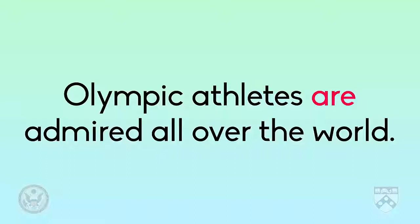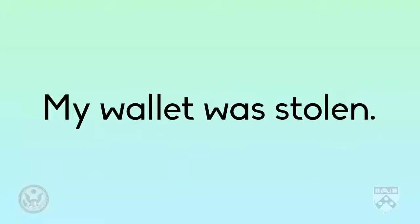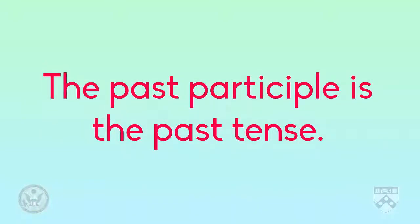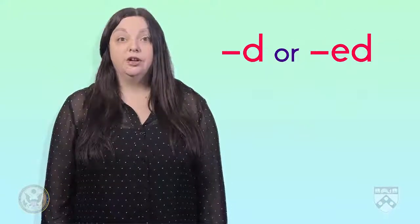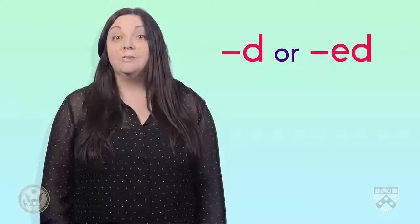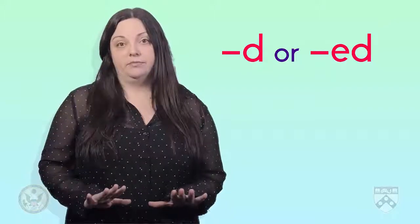In this case, athletes 'are admired.' But in the sentence 'My wallet was stolen,' we can tell that it happened in the past because of 'was.' In many cases, the past participle is the same as the past tense, as it is with the verbs 'attack' and 'admire.' If you can add -d or -ed to put a verb in the past tense, then the past participle is the same form.